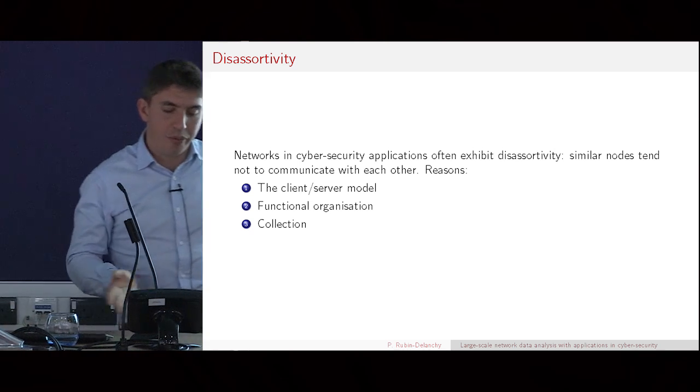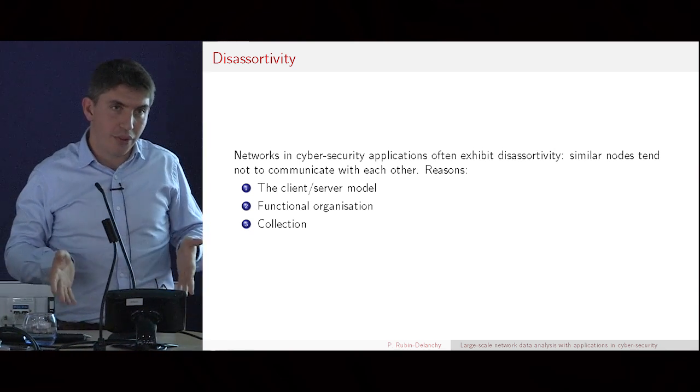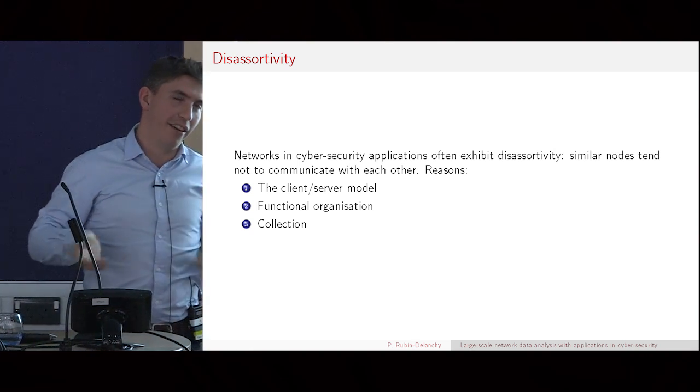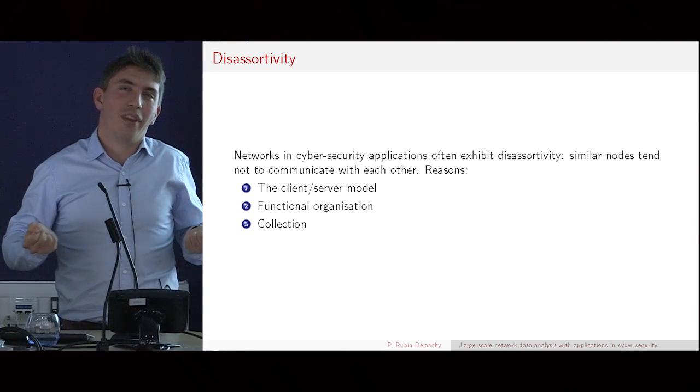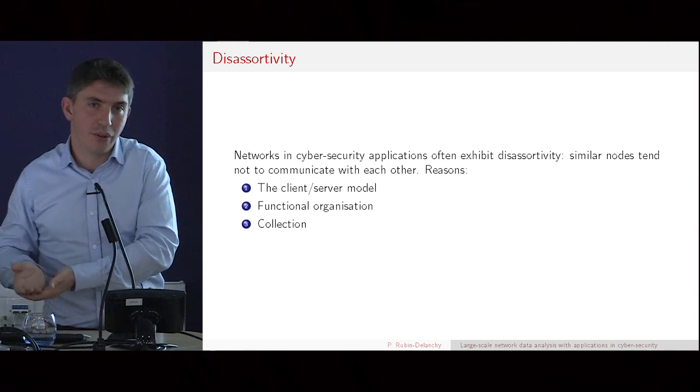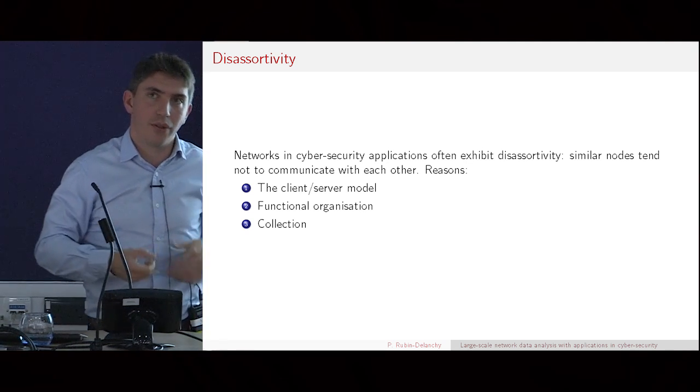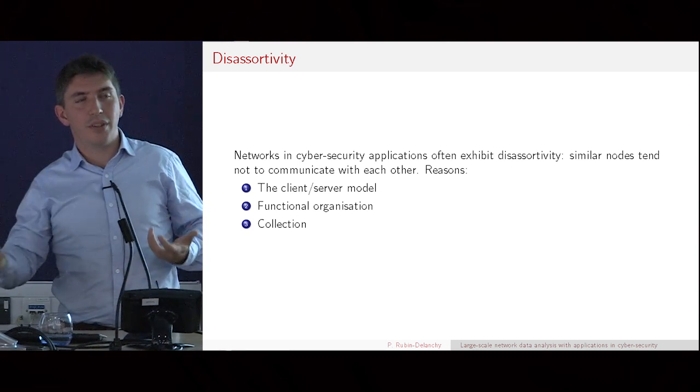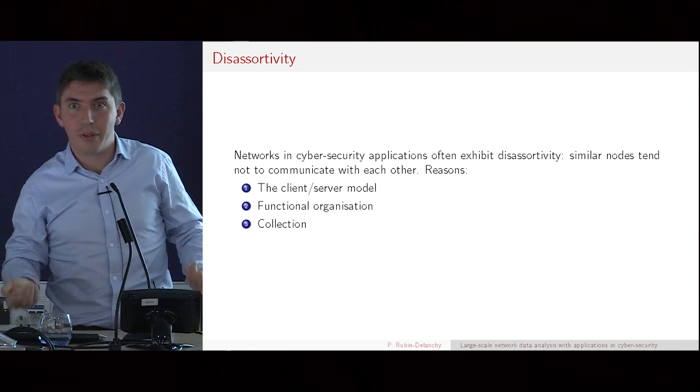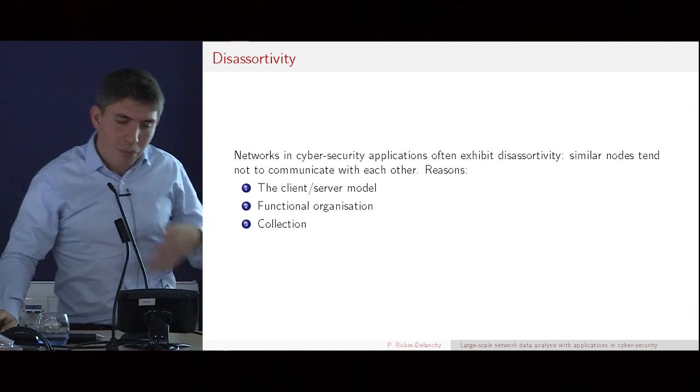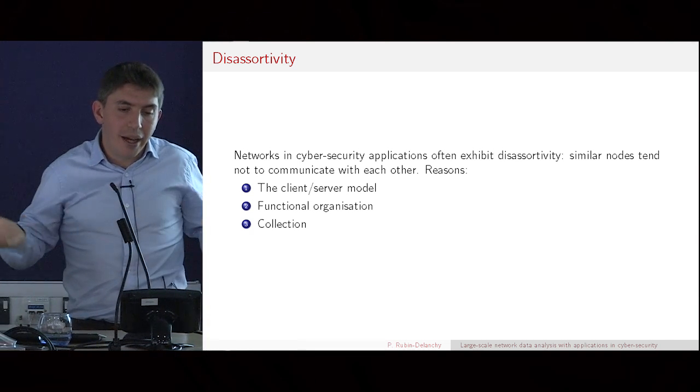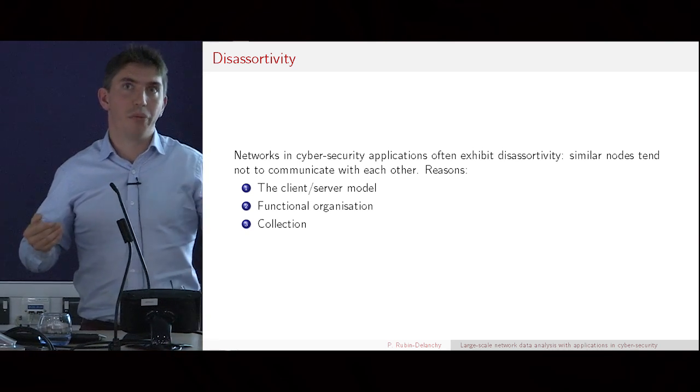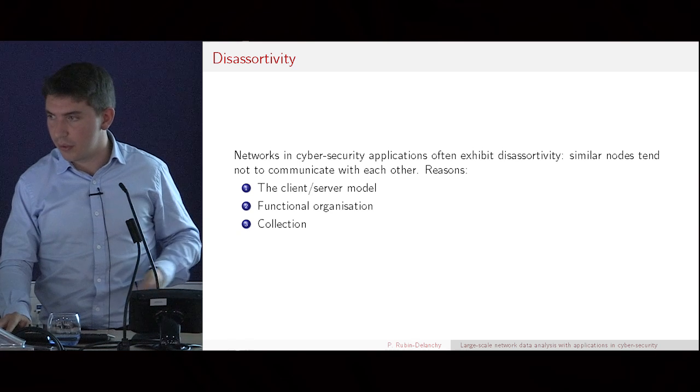Point number three is collection. Whenever you're looking at this data, you've got to realize you're not really looking at the real computer traffic. You're actually looking at how the traffic has been collected. You have an observation model on top. What's happening is you have routers that are placed in different positions, and if you've got internal traffic going on in one sub part of the network where there are no routers, then that traffic won't appear. And the last point is, you're looking at computer networks here. And computers aren't like people. People like to chat, whereas computers, a printer doesn't need to chat to another printer. A printer knows how to print itself. So each node has its own function, and it's not really going to need to make connections with other nodes of the same function. So all of these properties together create an effect where similarity in the intuitive sense actually implies the opposite of a connection. And I call that disassortativity.